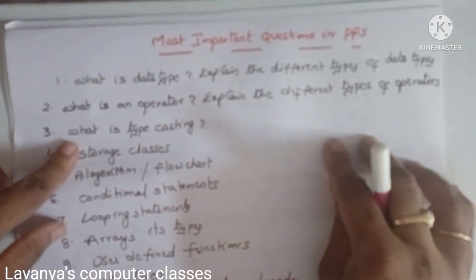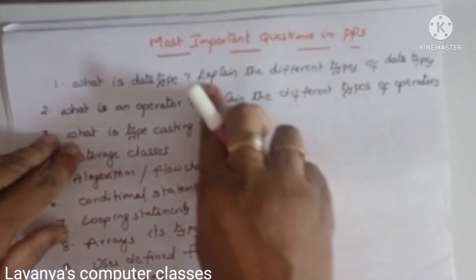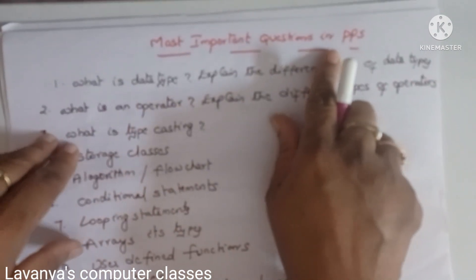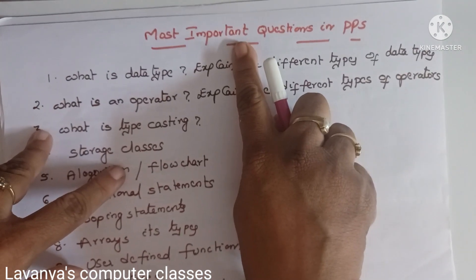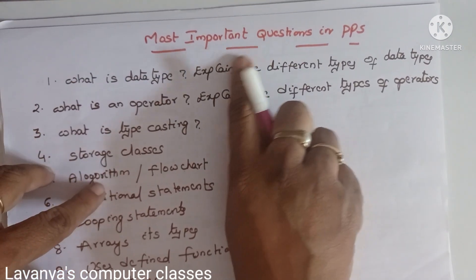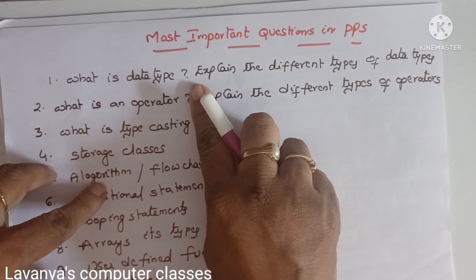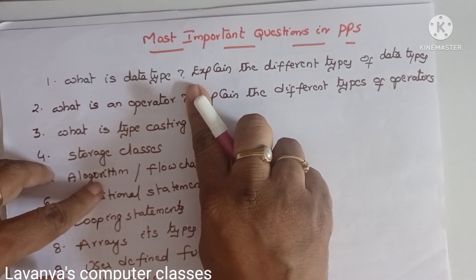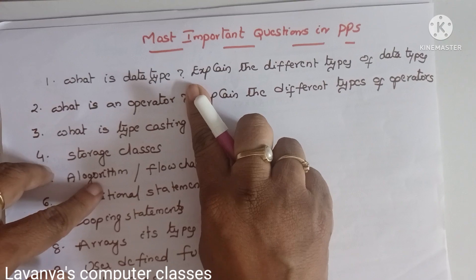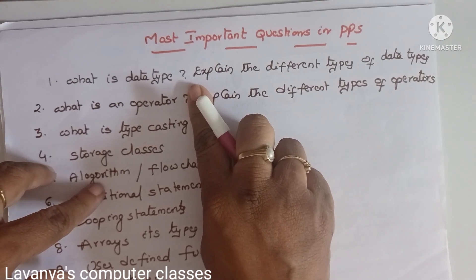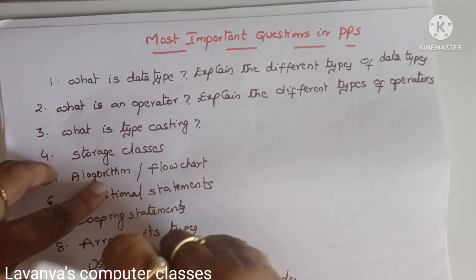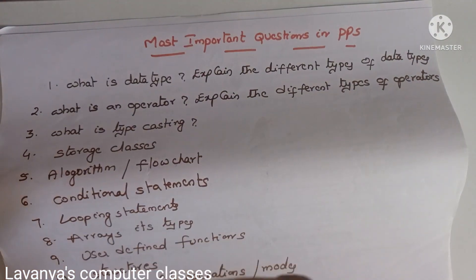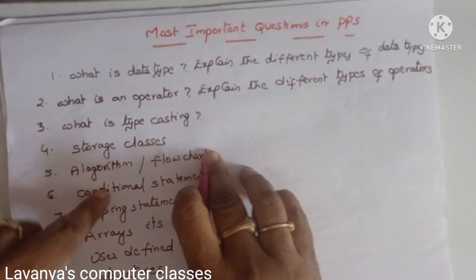Welcome to Lavanya's Computer Classes. In this video I will explain the most important questions in PPS - Programming for Problem Solving. These are very important questions in PPS. It follows a corona pattern, so if you learn three and a half units it is very easy to attempt all the questions, because you have to write only five questions out of eight.